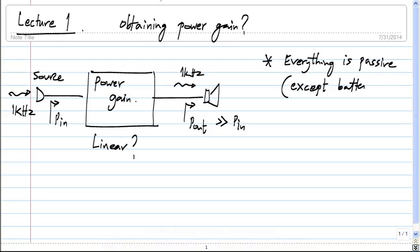Every circuit — basically everything — is passive except power sources like batteries. That is the common power source that we use. For instance, the amplifier that is being used right now also runs off some power supply. It does not use a battery probably, but it uses the mains supply to get some DC. Where does the power come from — the power coming out of the loudspeaker? Clearly I am not shouting as loudly as the loudspeaker, so it's adding some power. The amplifier is adding some power — where is that coming from? It has to be coming from the power supply. You have to have an additional power supply, and that power supply somehow supplies this power.